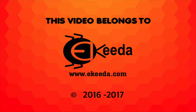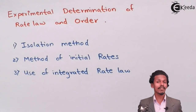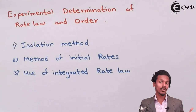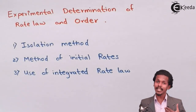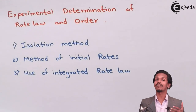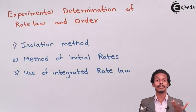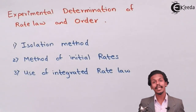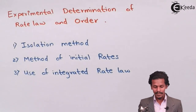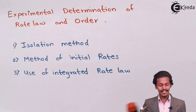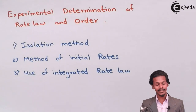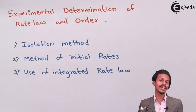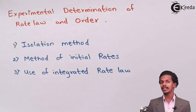As present on the screen, there are three ways to describe the order of reaction. You can apply any one of those to predict the value of X or Y, which are the experimental components based on rate law. The first one is the isolation method, the second is the method of initial rates, and the last is the use of integrated rate law.